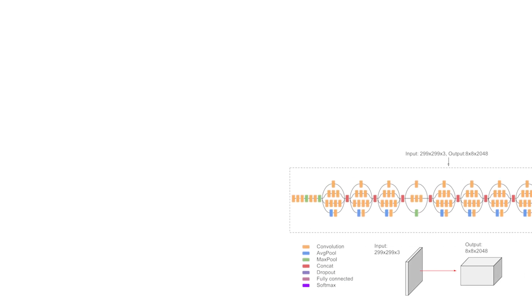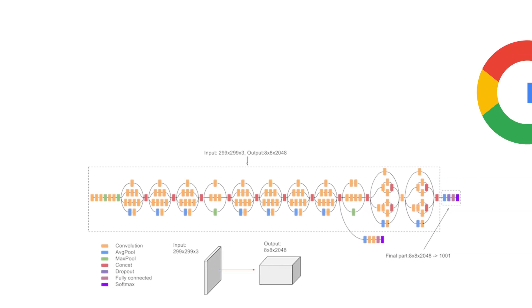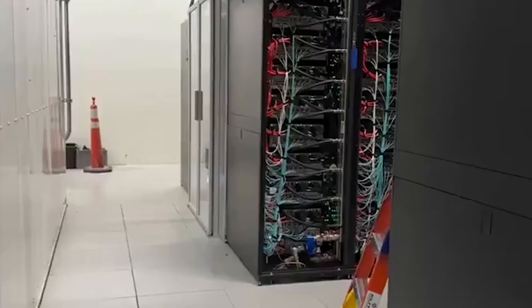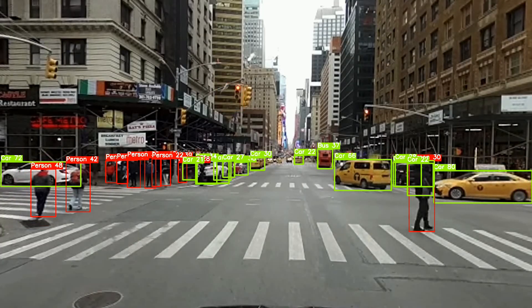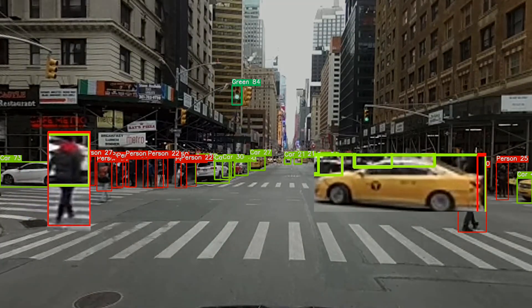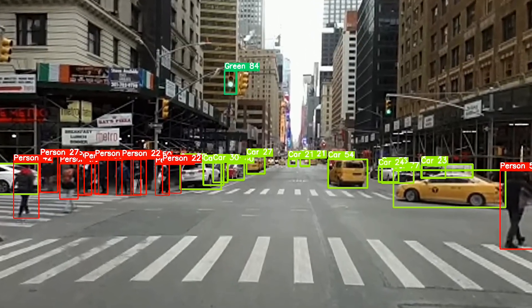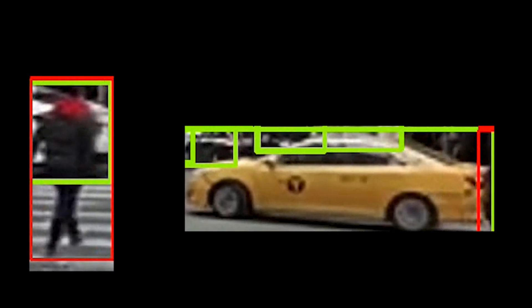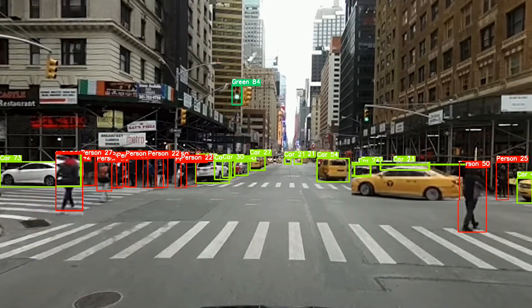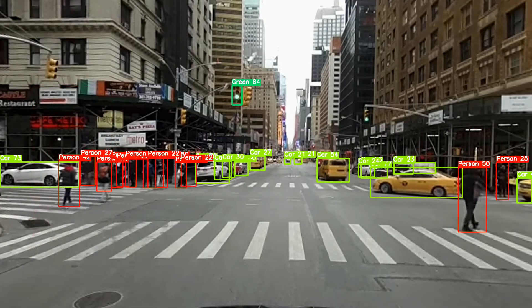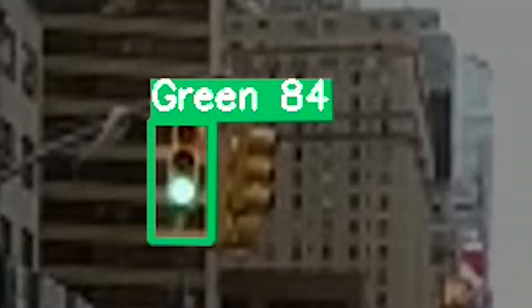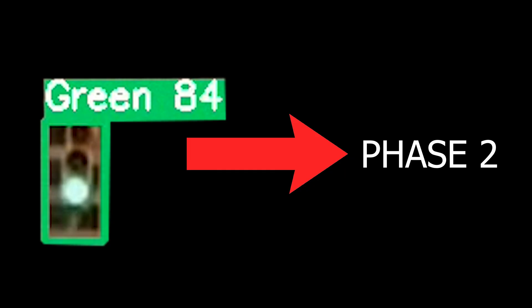My model is trained on two different CNNs. The first is Google's Inception V3 model, trained on millions of images and thousands of classes. This model identifies all the street objects in the scene — cars, people, bikes, trains. I then crop out the box around each object and color the box border, giving the object a boundary. In the case that the object is a traffic light, it moves on to Phase 2.